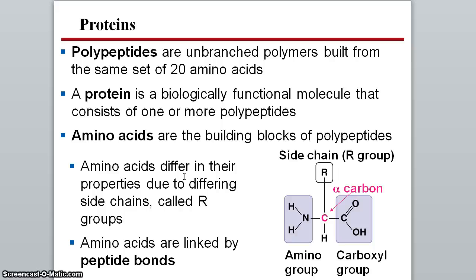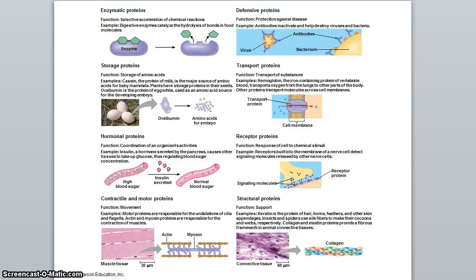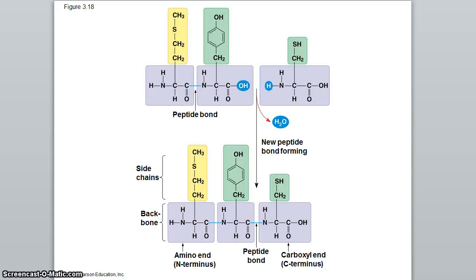Proteins, sometimes called polypeptides, are built from the same 20 amino acids — amino acids are the building blocks. Every amino acid has an amino group, a carboxyl group, an alpha carbon, and a hydrogen, plus a side chain called the R group that makes each amino acid different. Combining multiple polypeptides builds a protein, the functional molecule. Proteins serve many roles: enzymes, storage, hormones, motor proteins, structural proteins, receptor proteins, transport proteins, and defensive proteins in the immune system.